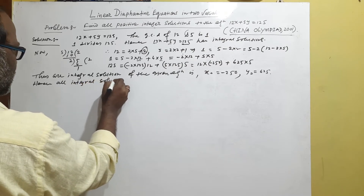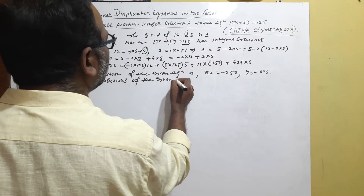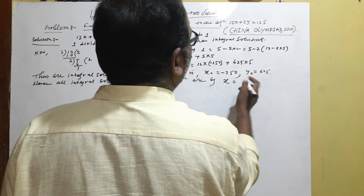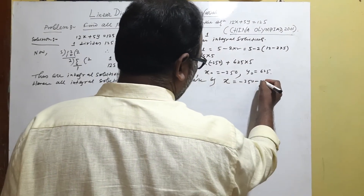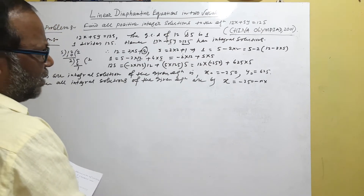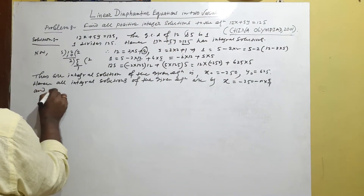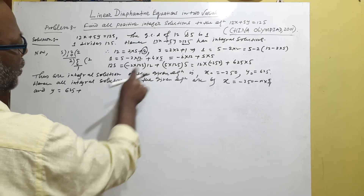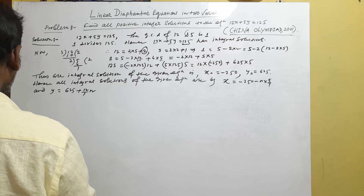Hence all integral solutions of the given equation are given by: x = -250 - 5n, where the coefficient of y (which is 5) is divided by gcd = 1, giving 5/1 = 5. And y = 625 + 12n, where the coefficient of 12 over 1 gives 12n. This holds for all integers n.